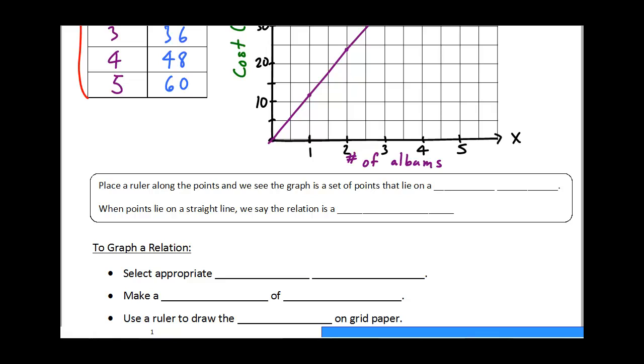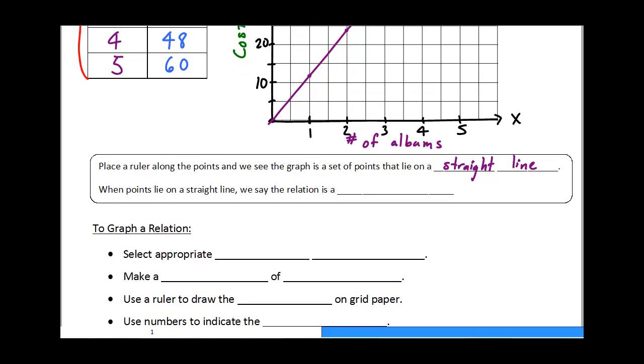Okay, so just to recap, we're going to place the ruler along the points and we see the graph is a set of points that lie on a straight line. If you have a straight line, then we say that that relation is linear. And in math seven, we're only going to be working with linear relations.